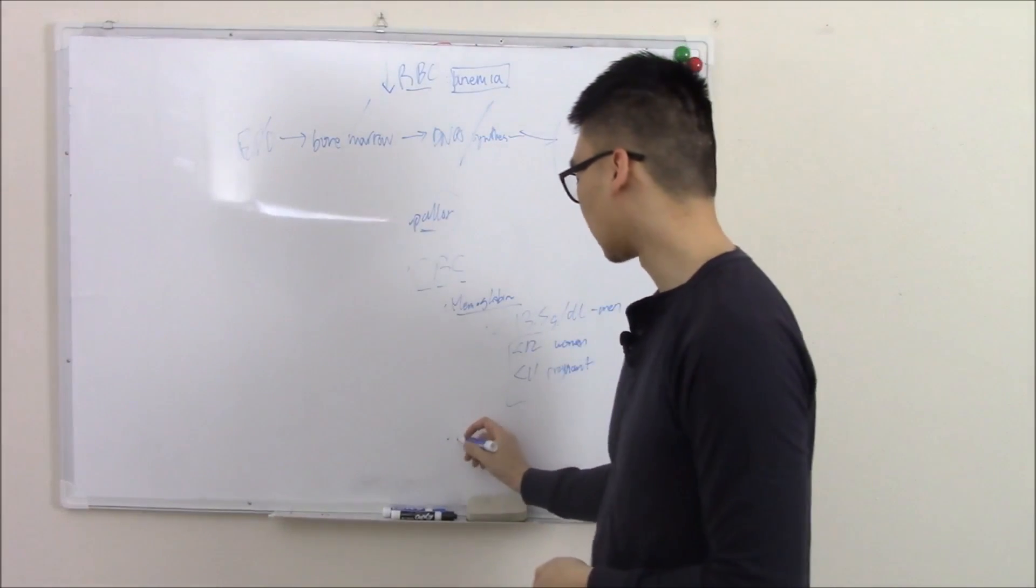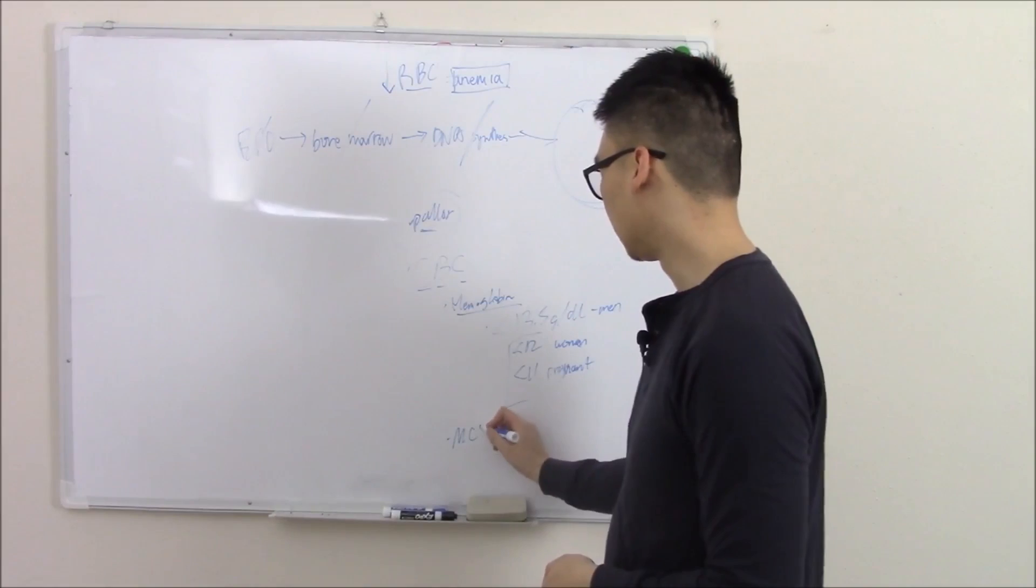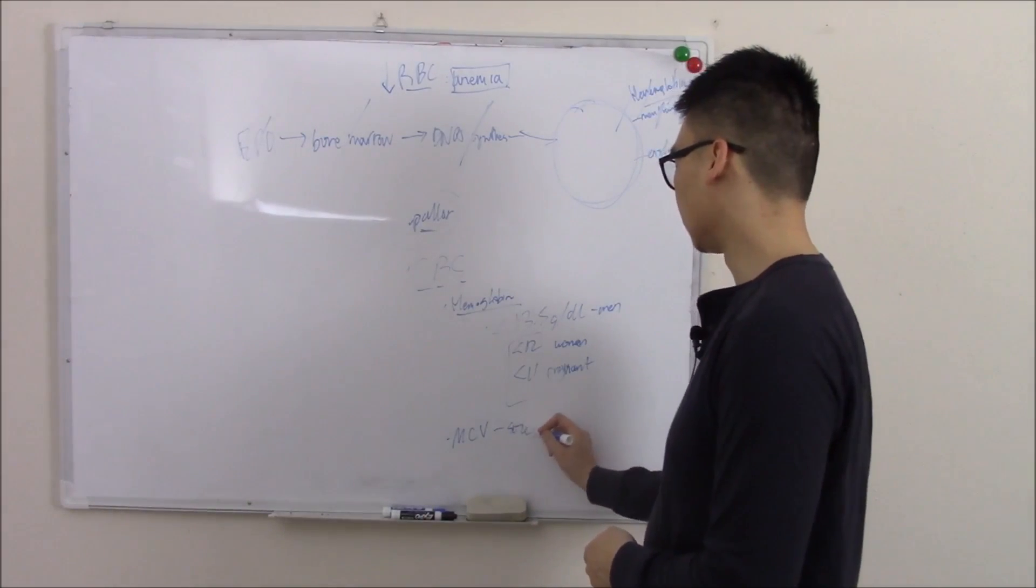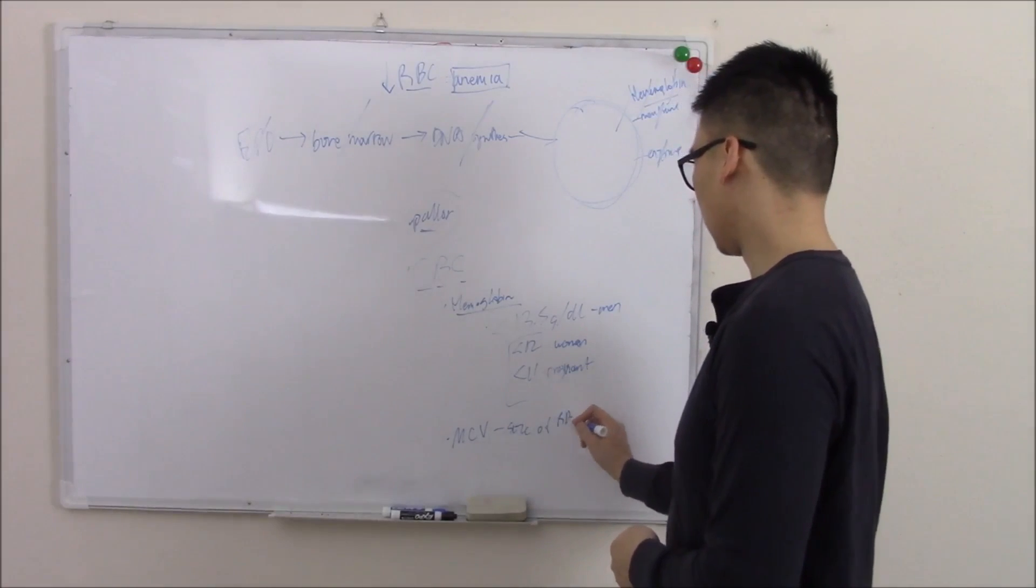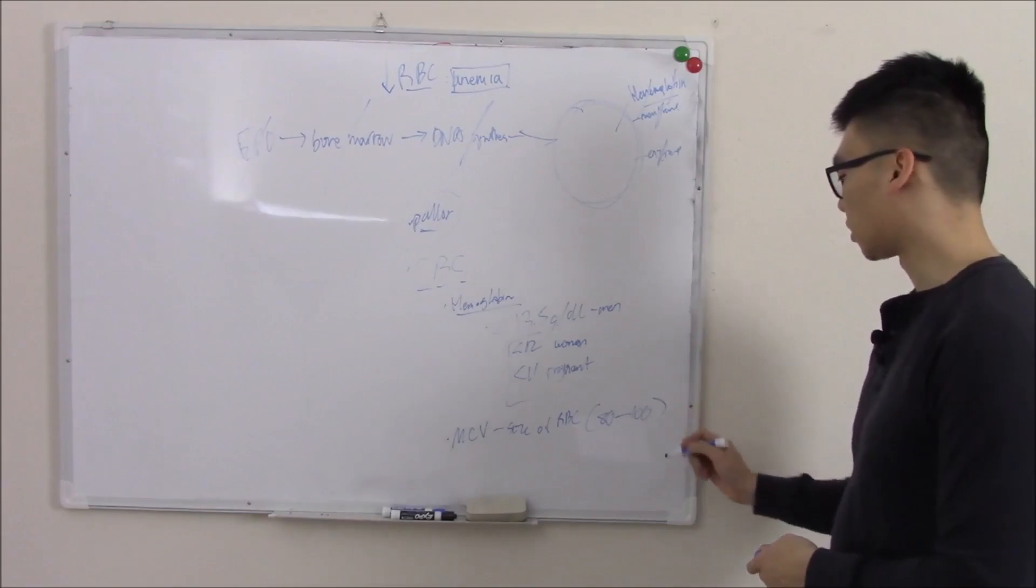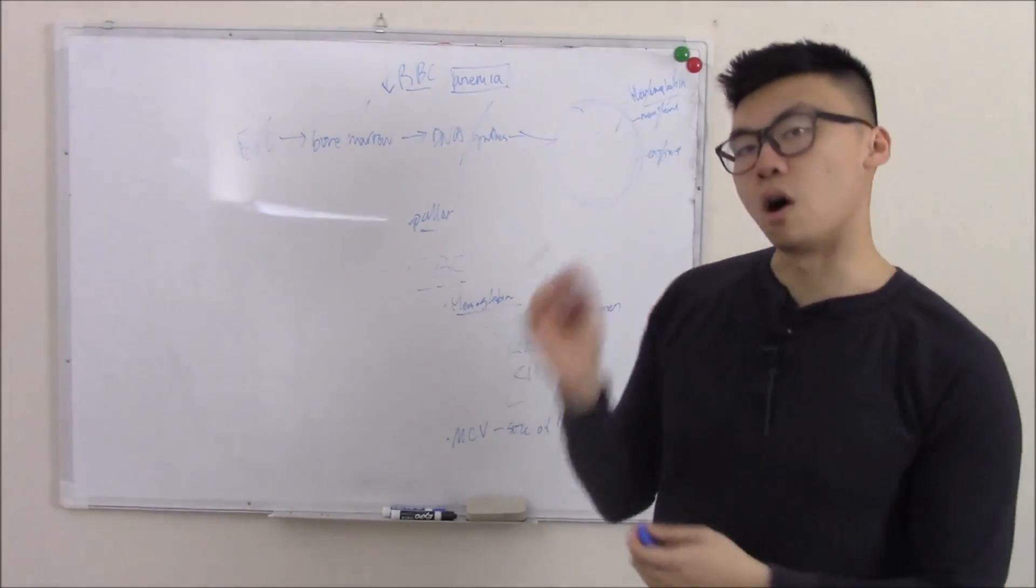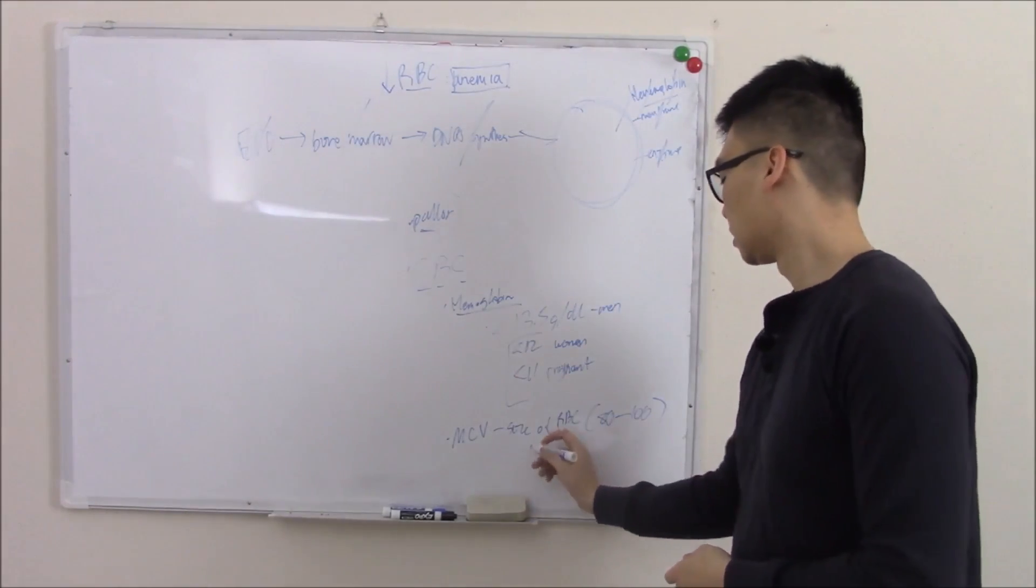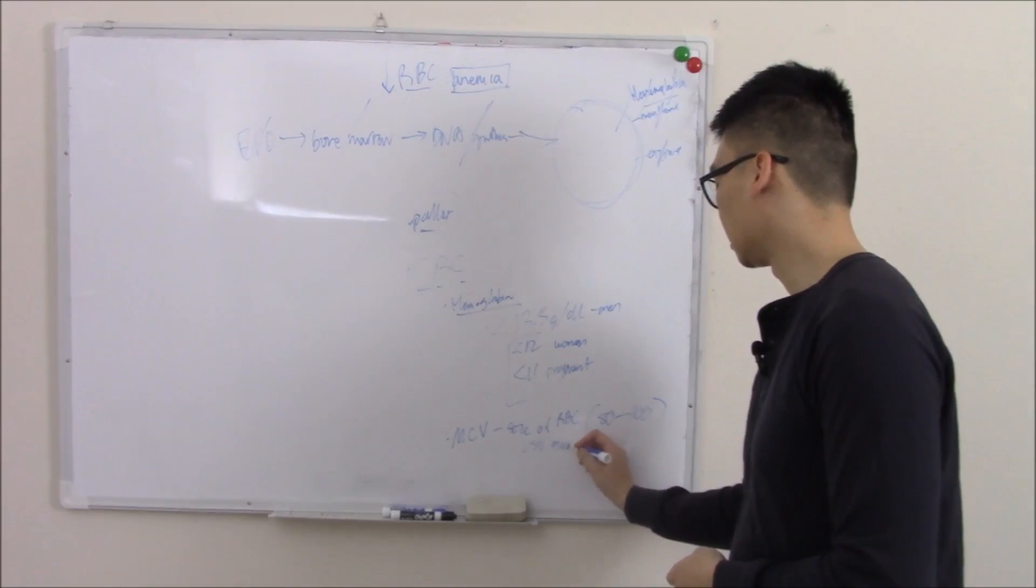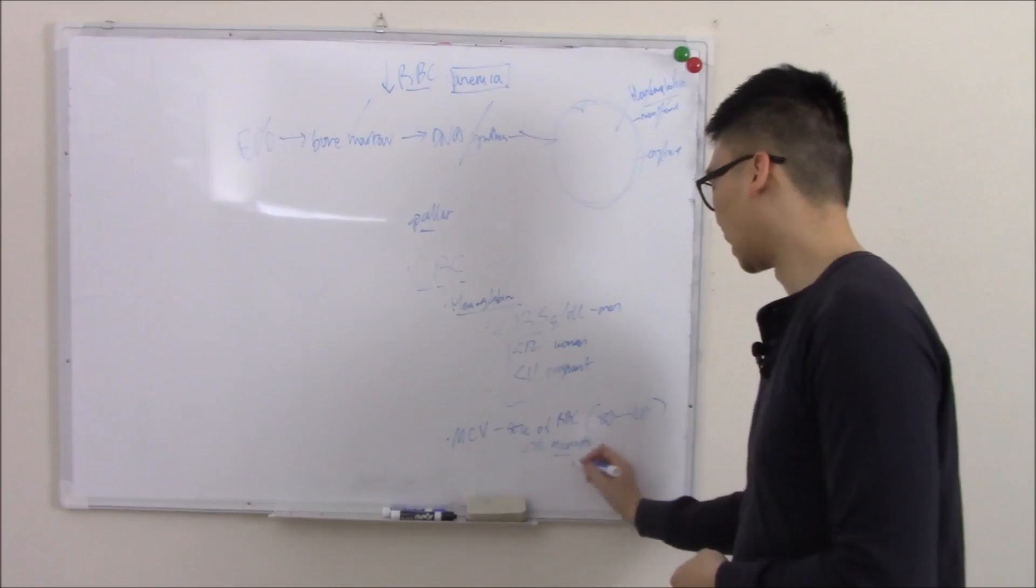Once you find anemia, the next thing you want to look at is MCV or mean corpuscular volume. That is basically the size of the RBC. And that's normally 80 to 100 femtoliters. If it's smaller than that, so right under 80, we'll call that microcytic, meaning small.